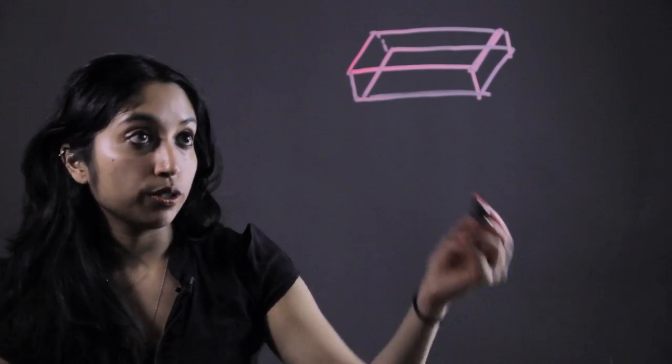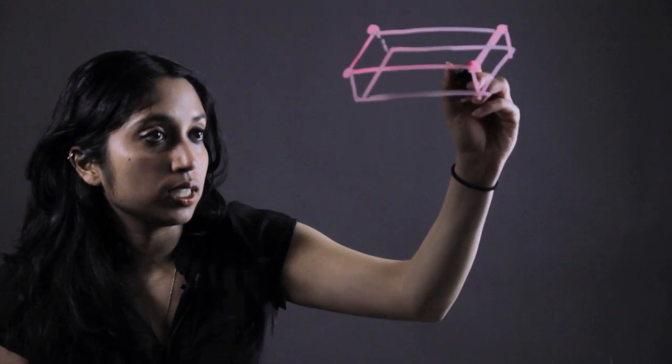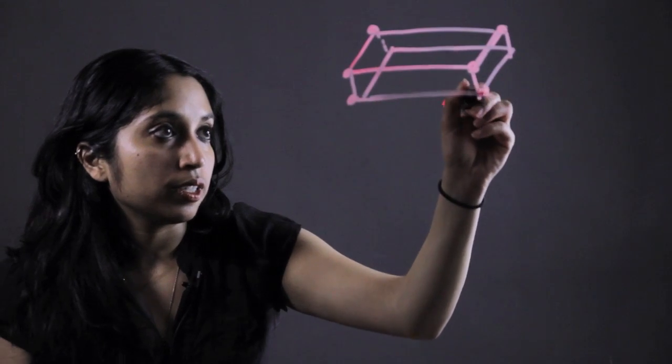Now a vertex is just a corner point. That's all it is. So these are all vertices. Here, here, here, here.